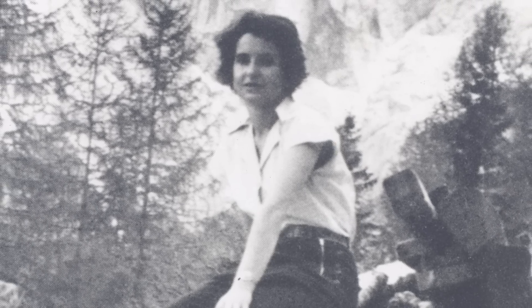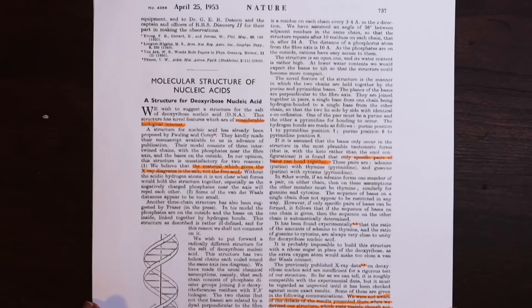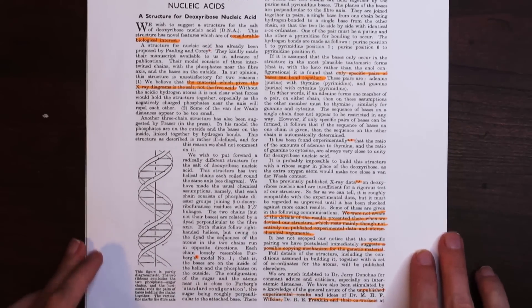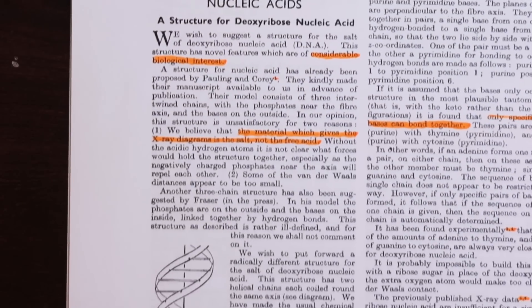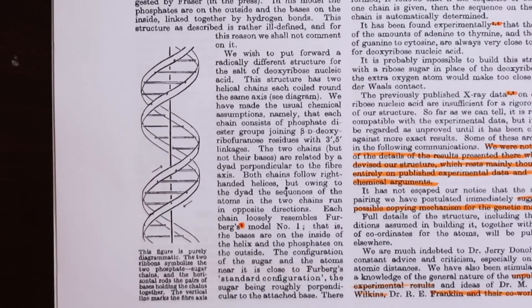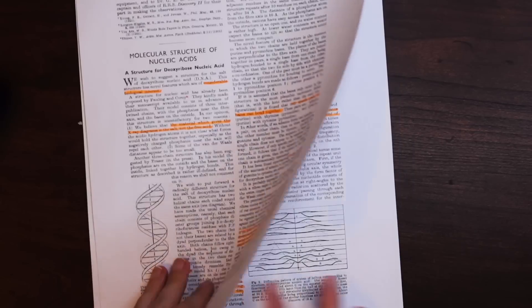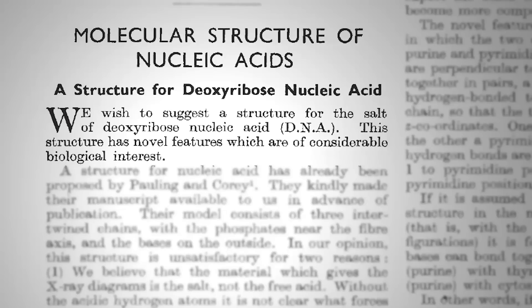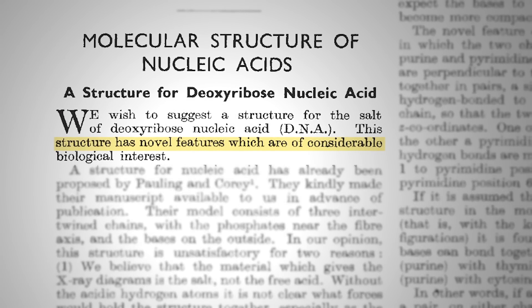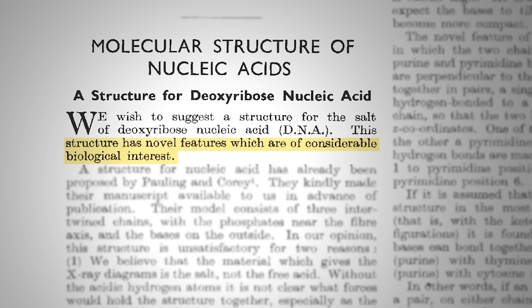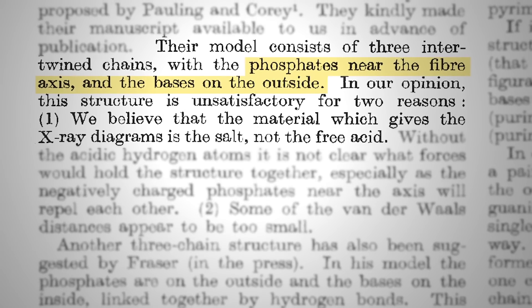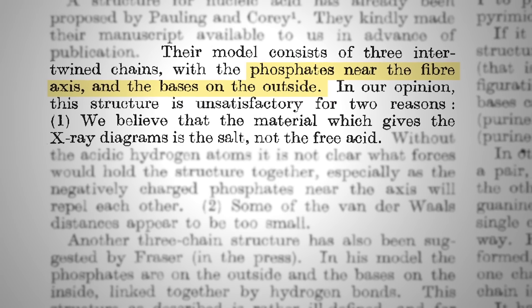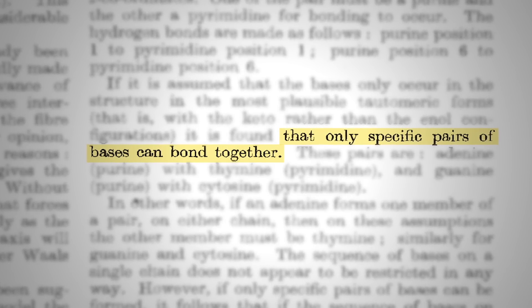But it's not true that Rosalind Franklin was completely left out of this narrative. This is the original paper from Watson and Crick published in the journal Nature in 1953, where they detail their newly worked-out structure of DNA, which turned out to be pretty much correct and is what they ultimately won a Nobel Prize for. The paper states that the structure of DNA has novel features of considerable biological interest. They describe a double helix shape with phosphates on the outside and bases — adenine, thymine, guanine, and cytosine — like rungs of a ladder on the inside. They mention that only specific pairs of bases can bond together and that this structure suggests a possible copying mechanism for the genetic material.